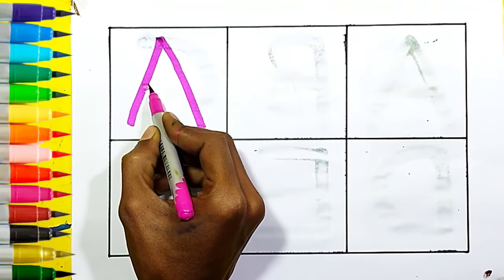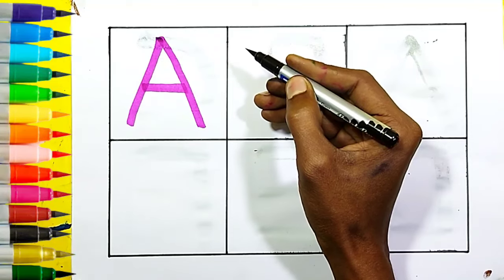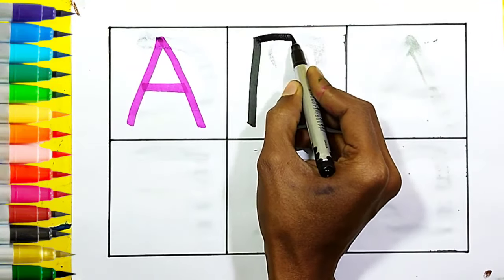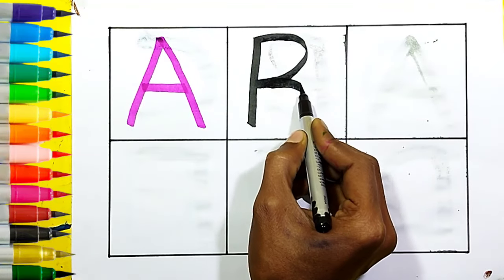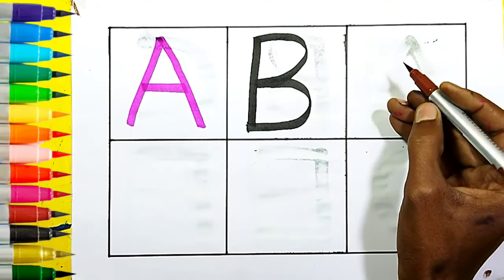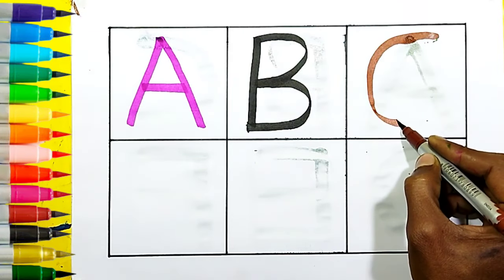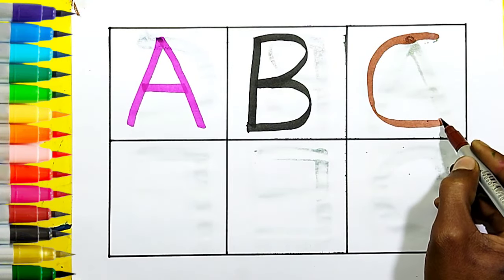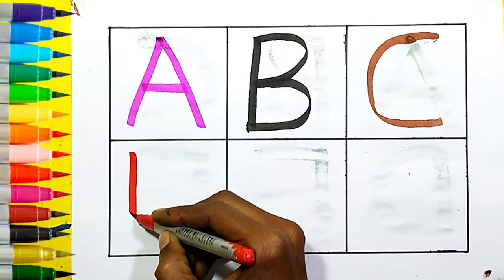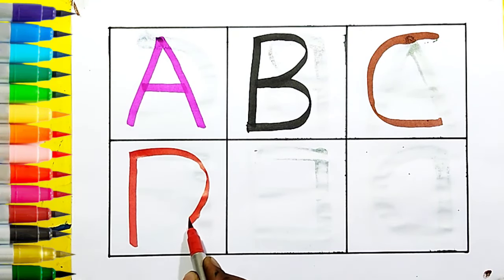A — apple. B — ball, brown color. C — cat, red color. D — dog.